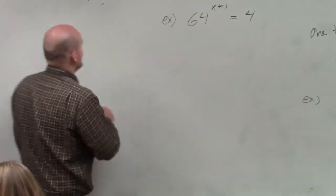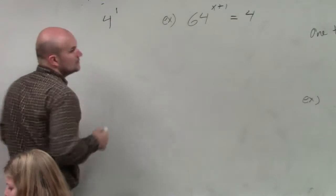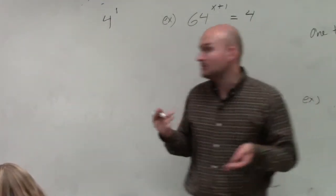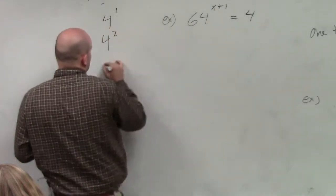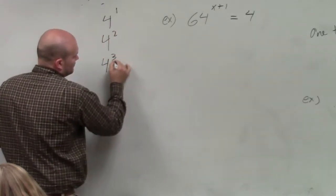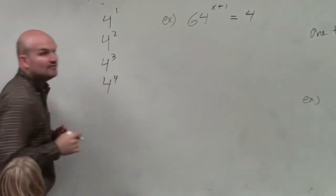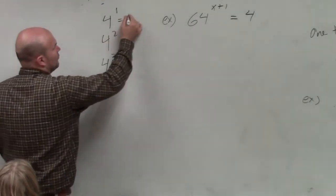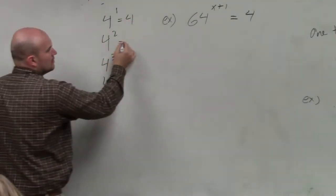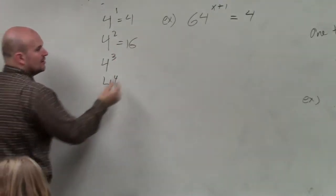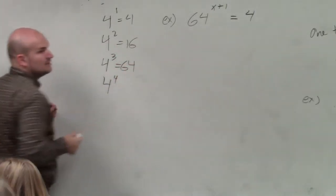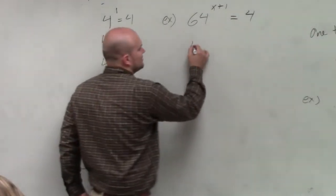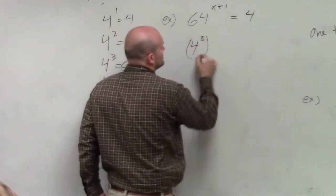We know that 4 is written as 4 to the first power. So the easiest thing to do then would be, let's write out 4 squared, 4 cubed, 4 to the 4th, and let's see if that makes it up to 64. Well, 4 to the first power is 4, 4 squared is 16, 4 cubed is — guess what — 64. So therefore, I am going to replace 64 with 4 cubed.